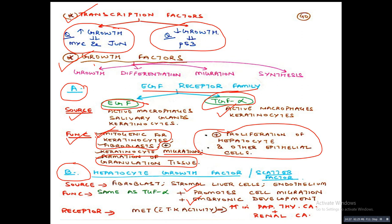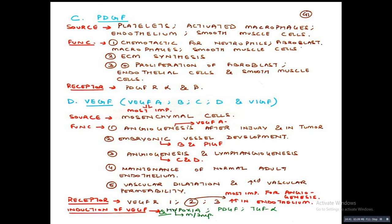The third growth factor is PDGF — platelet-derived growth factor. Sources: platelets, activated macrophages, smooth muscle cells, and endothelium. Three main functions: it is chemotactic for neutrophils, fibroblasts, macrophages, and smooth muscle cells; it is used for ECM (extracellular matrix) synthesis; and it stimulates proliferation of fibroblasts, endothelial cells, and smooth muscle cells. Receptors: PDGF receptor alpha and PDGF receptor beta.